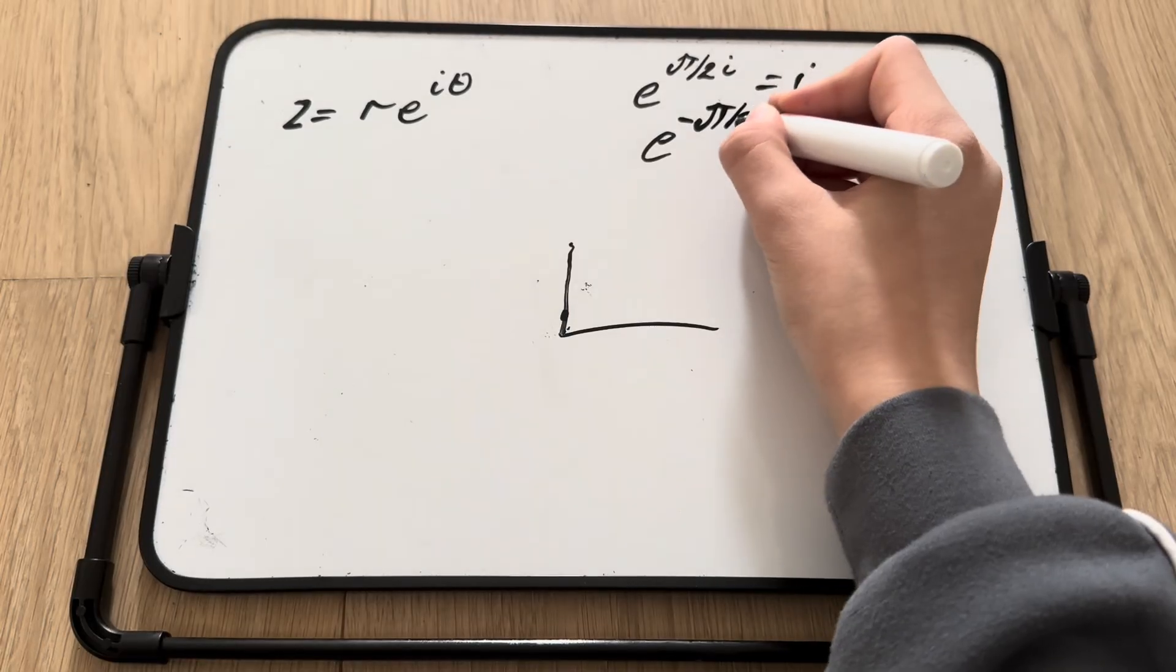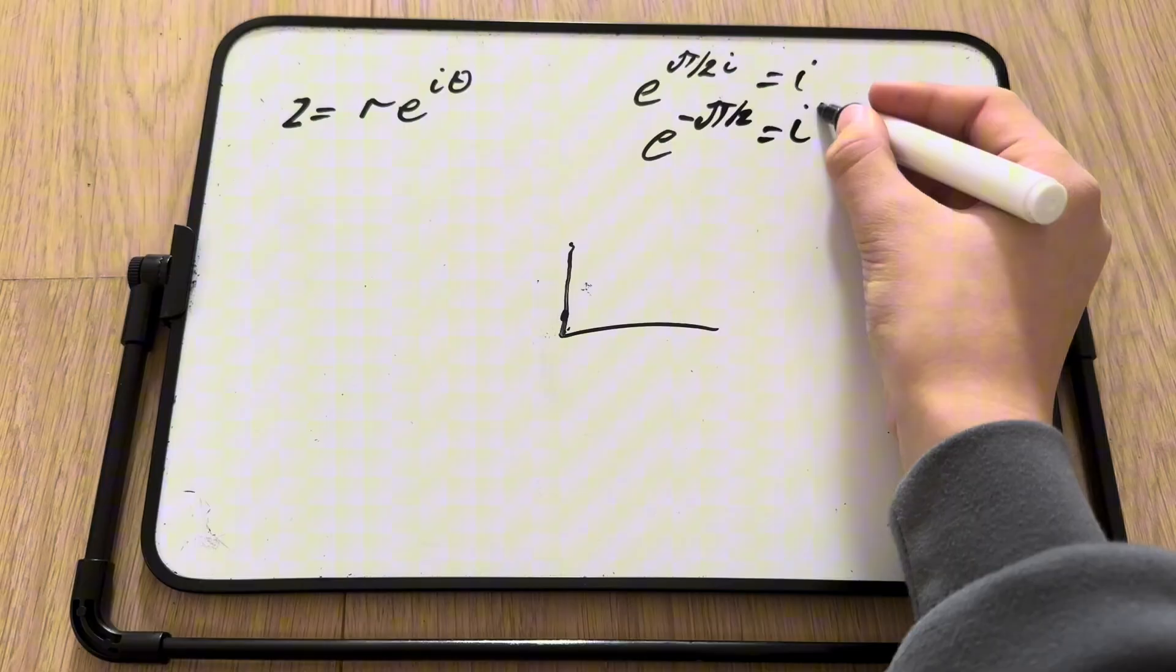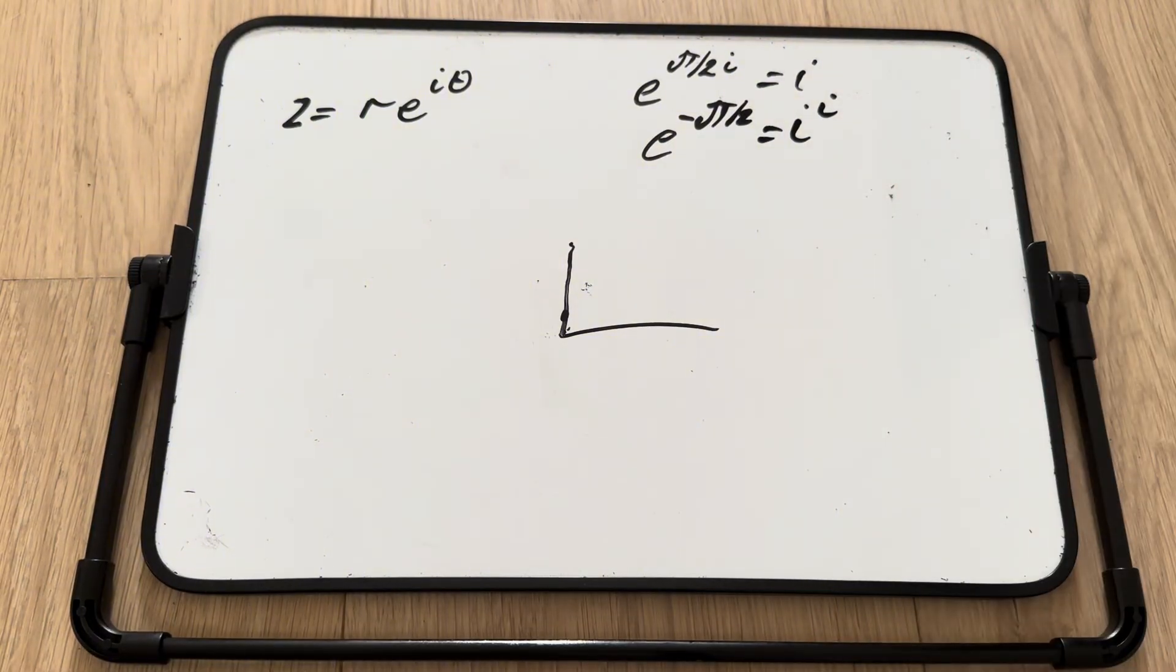we get e to the power of negative pi over 2, because if you remember, i multiplied by i is just negative 1. So this is our answer.